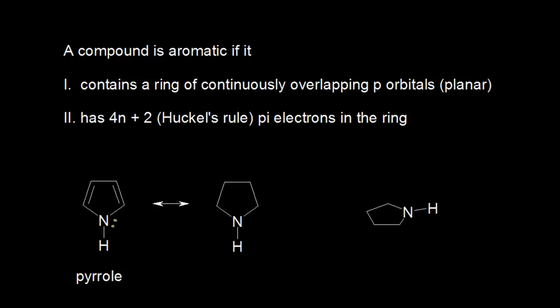In the last video, we used the criteria for aromaticity to see that heterocycles can be aromatic too. In this video, we're going to look at more aromatic heterocycles, specifically five-membered rings. And so we'll start with pyrrole right down here.